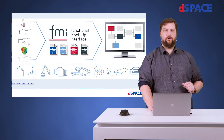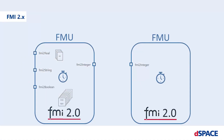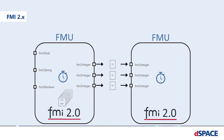So let's go into a little more detail. FMI provides four basic data types: real, string, boolean, and integer. These are scalar data types and you can do a lot with them, but you quickly run into some problems. For example, when you have an integer array and you want to exchange it with another FMU, you need to flatten this integer array into various ports. This leads to many unnecessary ports and it's really difficult to handle. It also limits your degree of freedom in how you want to create the FMU.